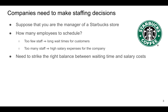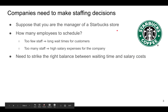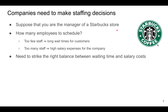Let's make this more concrete. Suppose you're the manager of a Starbucks coffee store. You need to make the decision about how many employees you plan to schedule. If you have too few staff, customers will have to wait a long time for the coffee, and customers without coffee are angry. If on the other hand you have too many staff, this will result in high salary expenses. So as a manager, you need to think about how to strike the right balance between customer waiting time and salary costs.